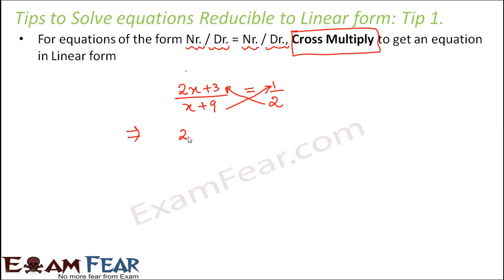So in this case what will happen: 2 into 2x plus 3 will be equal to 1 into x plus 9. So that is what you will get. In this case 2 into 2x would be 4x plus 2 into 3 would be 6, and this side it would be x plus 9, right.